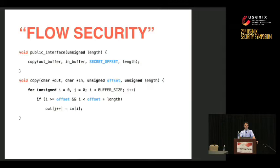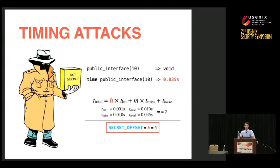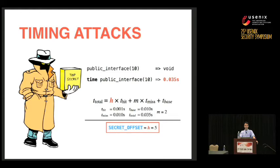An obvious fix is to make these functions return void so they can't possibly leak information through return values. But this program is still not completely secure, because besides learning from return values, an attacker could potentially learn secret information from the timing of the operation. He passes in a given argument length of ten, times how long the function takes to return, and with knowledge of the implementation and processor architecture, could extract secrets from timing.